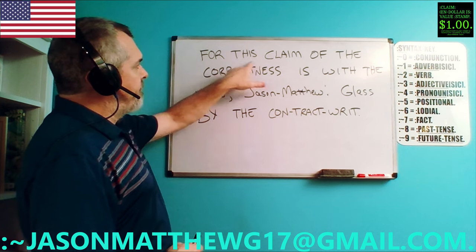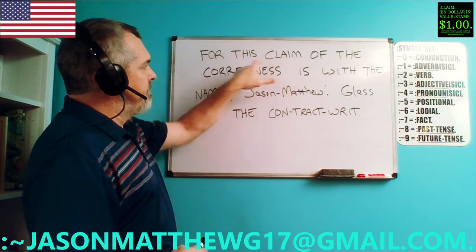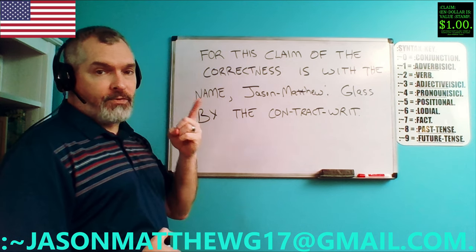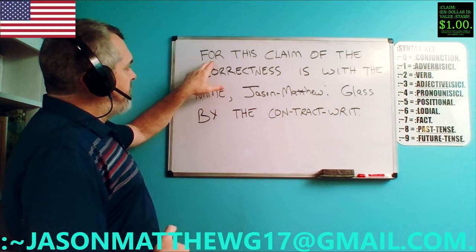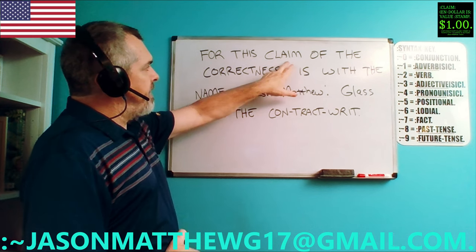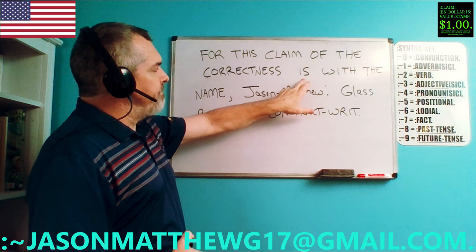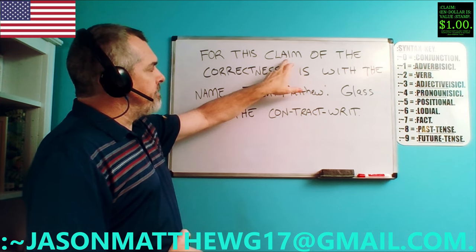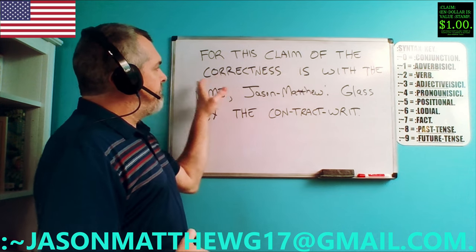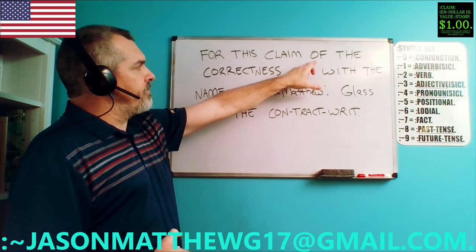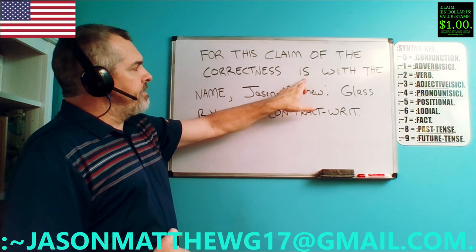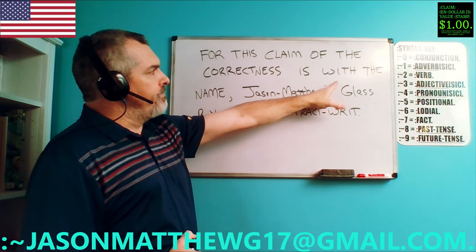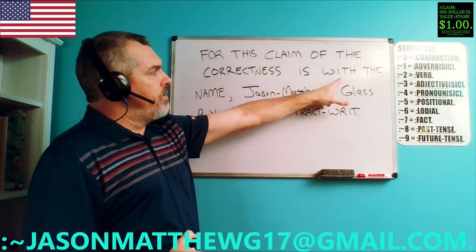We have our cause for this claim. 'For' is the positional — one of four positionals: for, of, with, and by — that is the cause of the sentence, and the fact is 'claim,' which is singular. That means the verb of the thinking is going to be singular because the cause is singular. Then we have the concern of the correctness, because 'of' serves a function of concern. 'Is' is the verb of the thinking, moving the cause and concern into the possessive with the.